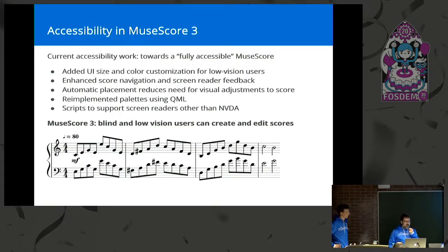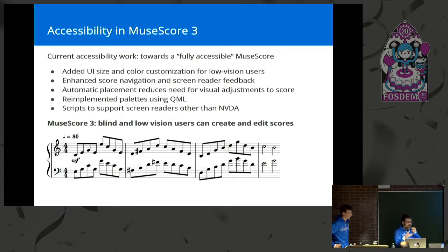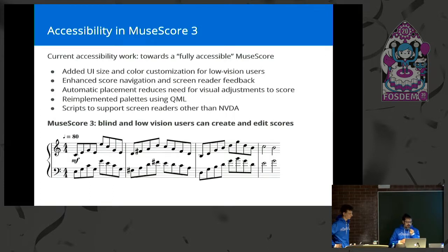For MuseScore 3, which came out last year and we're continuing to improve, we've really taken it up a notch — you can now really edit scores. We've removed the need to see the score to edit it: symbols used to appear wherever they liked causing collisions, but now we resolve those automatically. We've totally reimplemented the palettes using QML to make them screen reader and keyboard accessible, and we've really improved navigation and screen reader output for the score view. The bottom line is that blind users can now both read and create and edit scores.